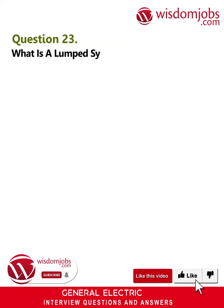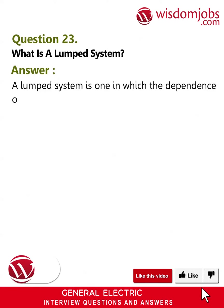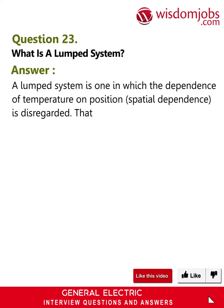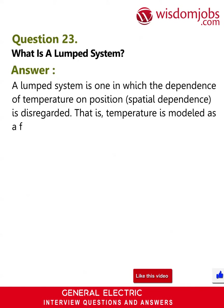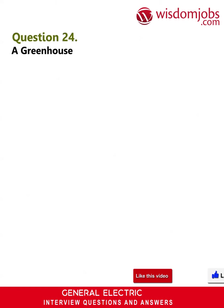Question 23: What is a lumped system? Answer: A lumped system is one in which the dependence of temperature on position — i.e., spatial dependence — is disregarded. That is, temperature is modeled as a function of time only.